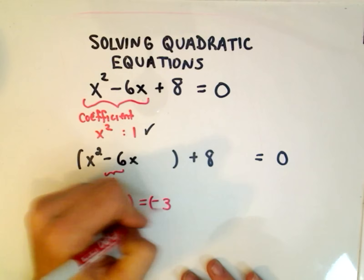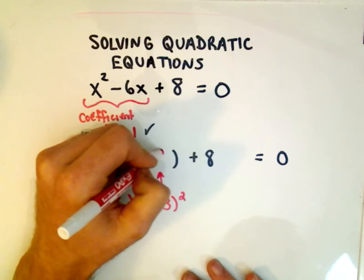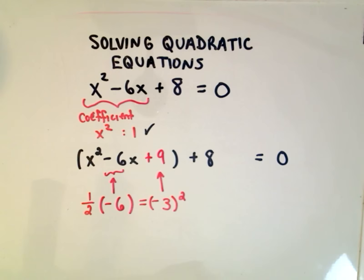And then what you do is you square it. And then you put that number back inside of there. So if we square it, we'll get positive 9.